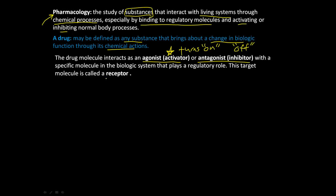This normally happens through a receptor. A receptor — let's say this is a cell membrane here — there's some kind of molecule or protein that sits inside this membrane. This is all just amino acid sequences. A drug or a normal hormone will come and sit on this receptor. If it's an agonist, it will turn on this process. If it's an antagonist, it will inhibit this molecule from functioning.